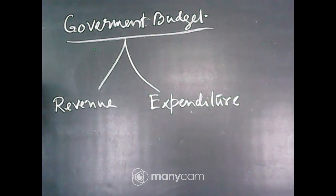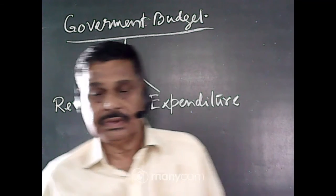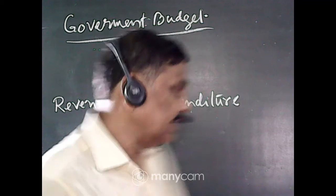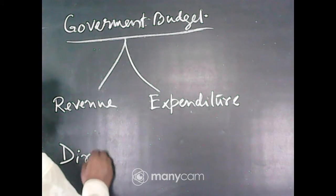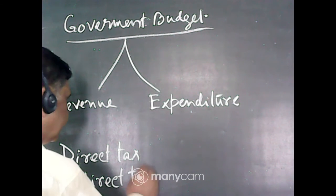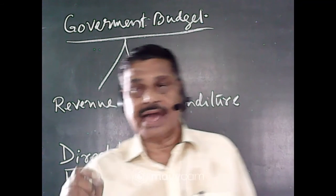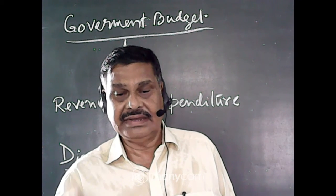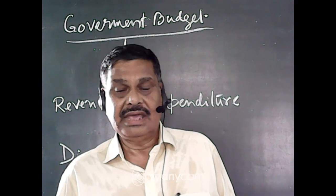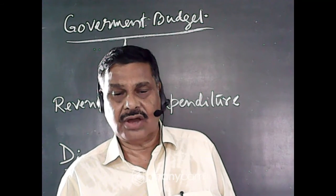The revenue aspect is the aspect through which the government earns income. The government earns income from taxes. Taxes are of two types: direct tax and indirect tax. The tax which is directly deducted from the income of the incumbent is called direct tax. No income earner under direct tax can avoid paying tax.